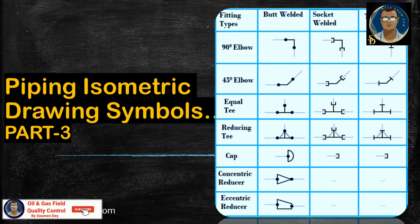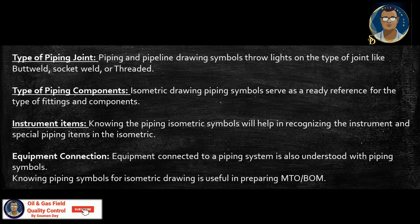Before showing the first slide, let us discuss something. For reading and understanding a piping isometric drawing, one should learn the piping isometric drawing symbols thoroughly. Usually all these piping and pipeline drawing symbols are constant and do not vary much from one organization to another. Knowing the piping drawing symbols provides various information — like the type of piping joint. Piping and pipeline drawing symbols throw light on the type of joint, like butt weld, socket weld, or threaded weld.